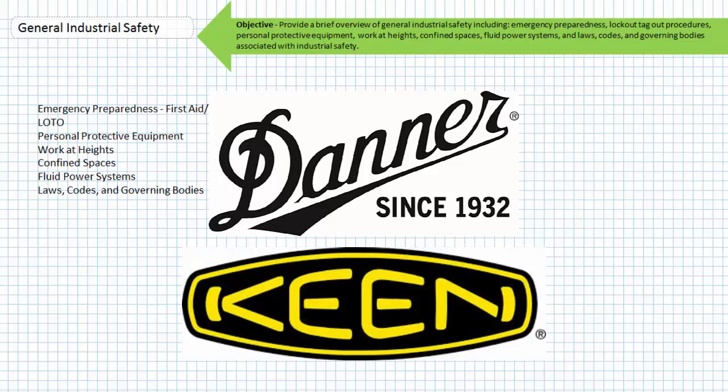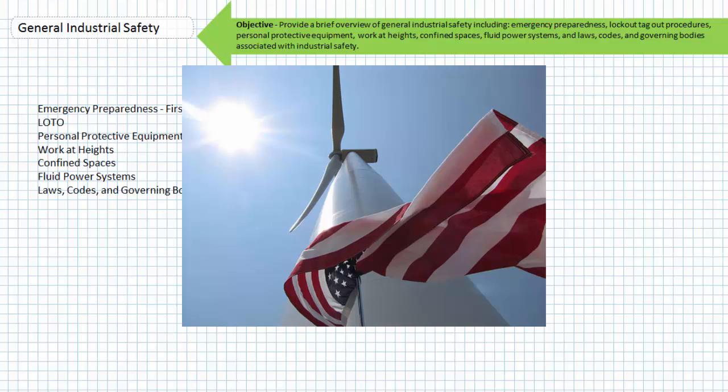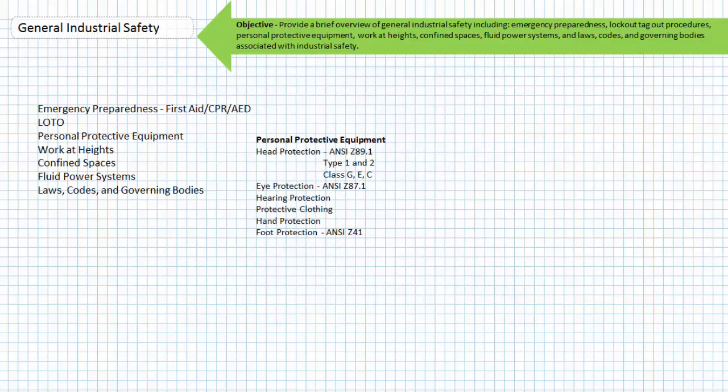Among the many compelling reasons why I'm such a strong advocate for renewable energy is because it cannot be outsourced. Moving on, let's look at three special case scenarios for industrial safety: Fall protection work at heights, confined spaces, and fluid power systems.